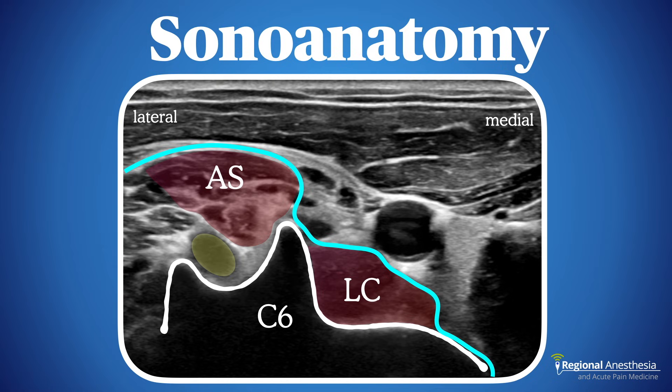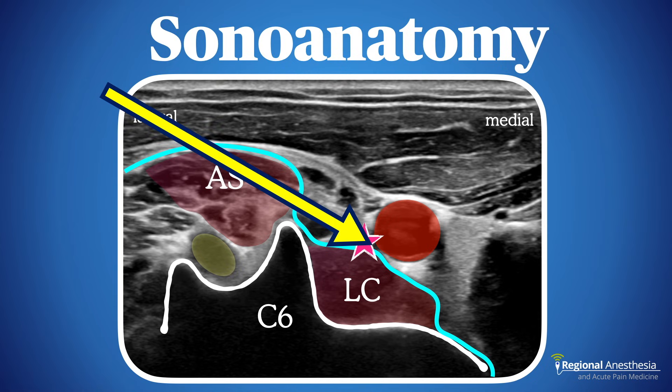We see the C6 nerve root emerging from the intervertebral foramen, and the carotid artery medial to the longus colli; the internal jugular is compressed but immediately lateral to the carotid. Remember, the stellate ganglion isn't at C6 — it's at C7 or T1 — but our target is just superficial to the longus colli muscle beside Chassaignac's tubercle. The needle path will take us through the anterior scalene muscle.